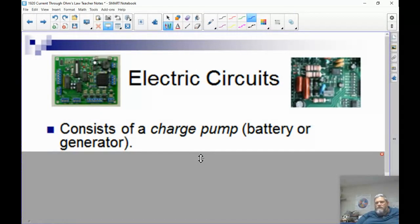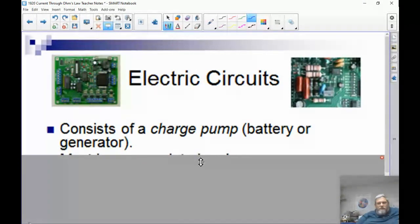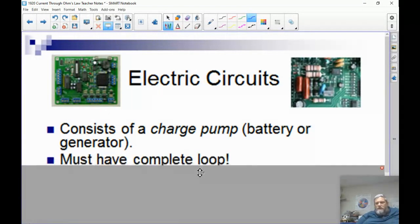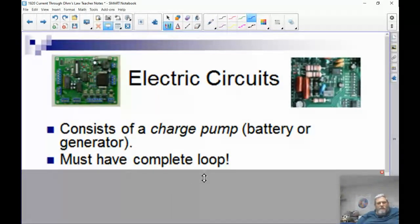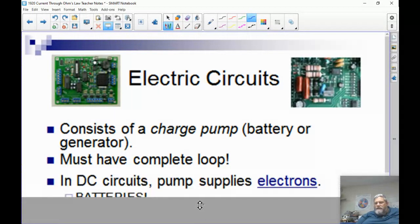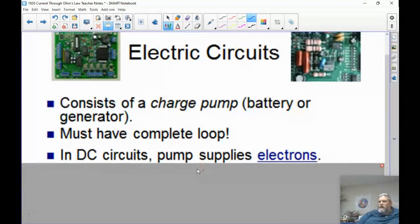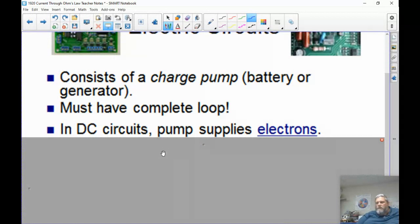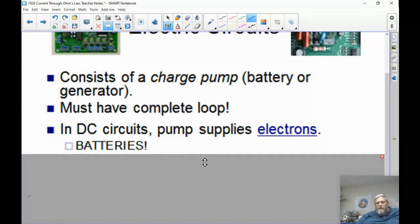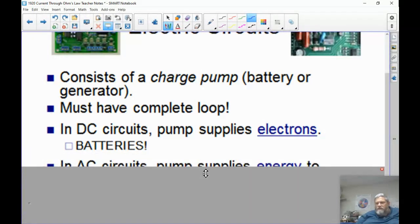All circuits consist of some sort of charge pump, that would be the battery here or the generator if it was a different type of circuit. You have to have a complete loop, which you saw in the lab because when you disconnected one of the wires, the whole thing stopped. In DC circuits, the pump supplies electrons. Batteries supply the electrons that go through. That's why eventually batteries run down, because they run out of the chemicals that create those electrons in the reaction.